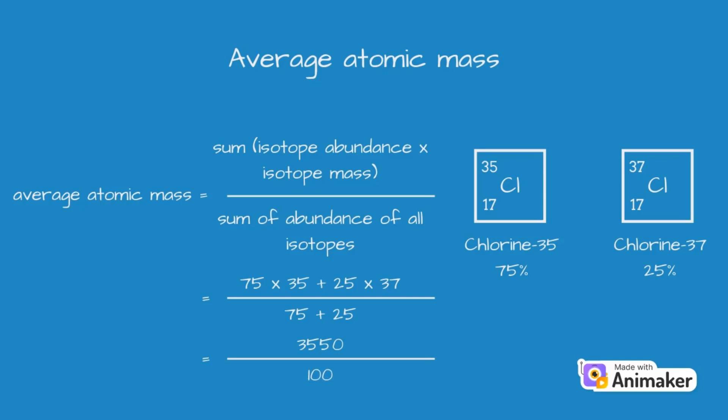Which makes sense, since there are two isotopes, and together they should add up to 100%, so that it represents all of the chlorine atoms. Dividing them, we get the average atomic mass of chlorine as 35.5u, where u is the atomic mass unit, which we will discuss in a separate video.